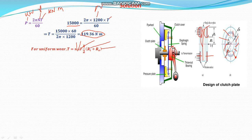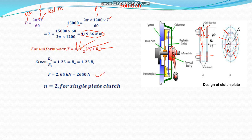Using the formula T = N × μ × F × ½(Ri + Ro), and given that Ro/Ri = 1.25, so Ro = 1.25 Ri. The axial force is 2.65 kN = 2650 N. For a single plate clutch, N = 2 since there are two active contact surfaces. The coefficient of friction μ = 0.3 on both surfaces.